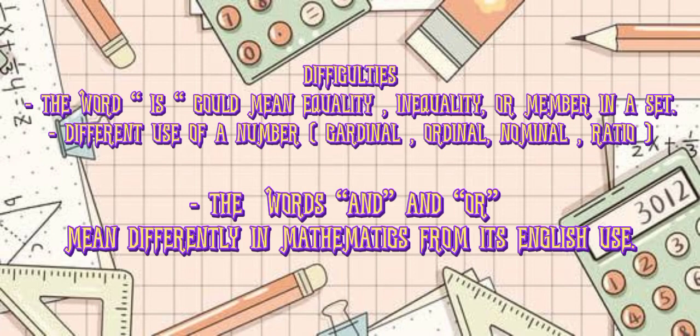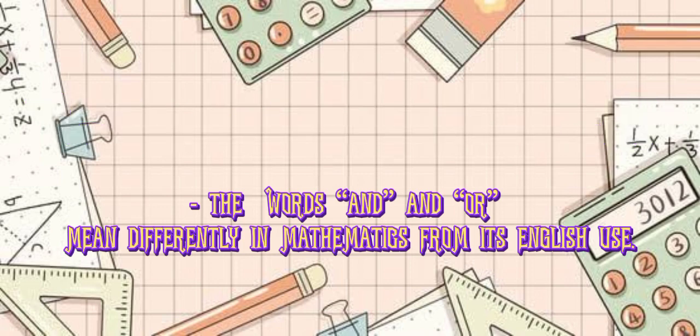These are the difficulties in math: The word 'is' could mean equality, inequality, or membership in a set. Different uses of a number: cardinal, ordinal, nominal, ratio. The words 'and' and 'or' mean differently in mathematics from their English use.